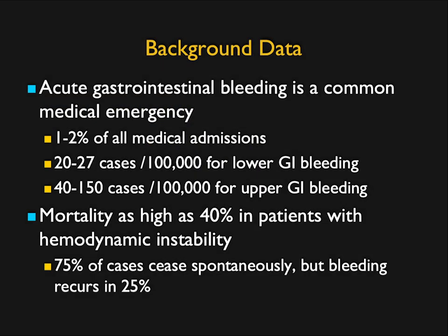From the background data, acute GI bleeding is a common medical emergency, accounting for up to 2% of all medical admissions — 20 to 27 cases per 100,000 for lower GI bleeding, and up to 150 per 100,000 for upper GI bleeding. Upper GI bleeding, as we all know, is more common.